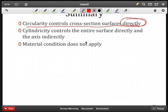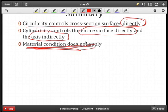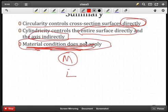Cylindricity is going to control the entire surface and indirectly control the straightness of that axis. Don't forget, material condition does not apply. In other words, if you see an M or an L in the feature control frame, that is a mistake.